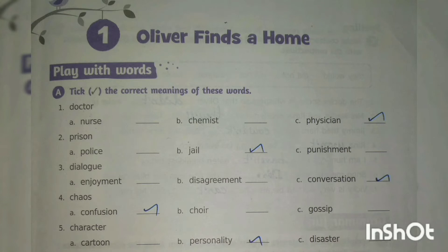Look at the second question now — 'prison'. The options given are option A, police; option B, jail; option C, punishment. The right answer is option B, jail. So prison means jail.